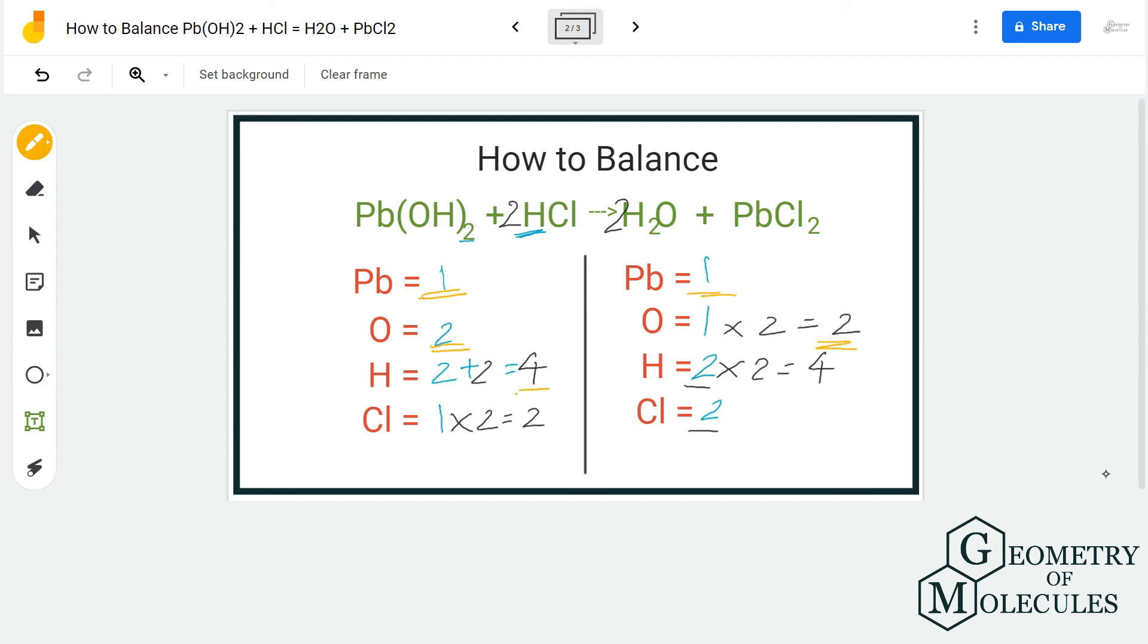I hope this video helps you to understand how to balance an equation. First you count the number of atoms on both the sides. Try and balance out the number of atoms first on reactant side and then proceed to the product side.